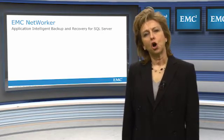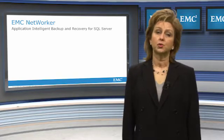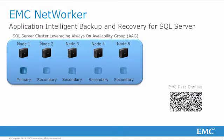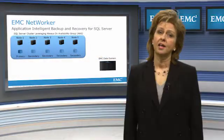Microsoft introduced Always-On Availability Groups in SQL Server 2012. Similar to Database Availability Groups in Exchange, Always-On Availability Groups provide a level of availability and protection for your production data residing in the database. This technology does not eliminate the need for a sound backup and recovery solution for SQL Server data, though. While Always-On Availability Groups provide high availability and multiple copies of your SQL data, the possibility for soft corruption to propagate to all copies of your database is still possible.